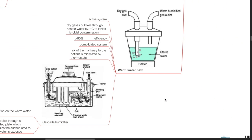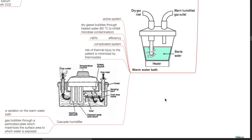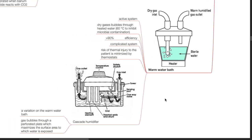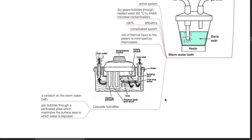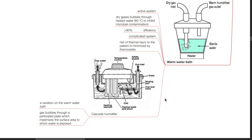Warm water bath: this is an active system. Dry gases bubble through heated water at 60 degrees Celsius to inhibit microbial contamination. Efficiency is more than 90%, though it is a complicated system. The risk of thermal injury to the patient is minimized by thermostats. The cascade humidifier is a variation on the warm water bath, where gas bubbles through a perforated plate which maximizes the surface area to which water is exposed.